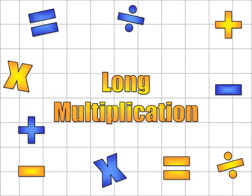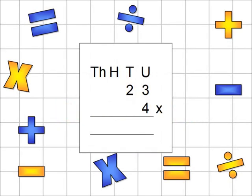Today we're going to be learning about long multiplication. Long multiplication is something that lots of people worry about, but it's not too bad after you've had some practice. We're going to begin by looking at multiplying a two-digit number by a one-digit number — in this case, 23 times 4.